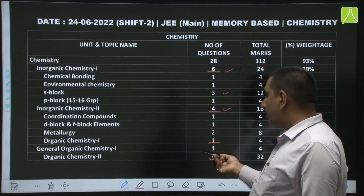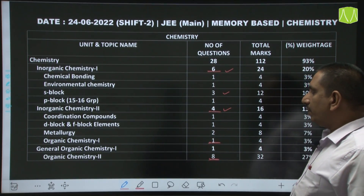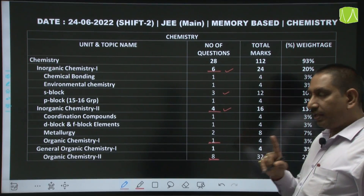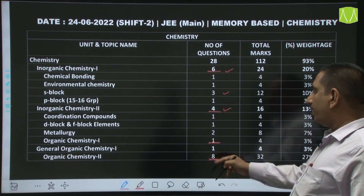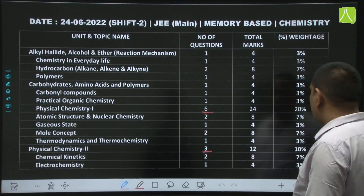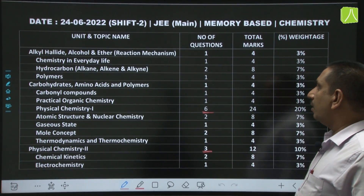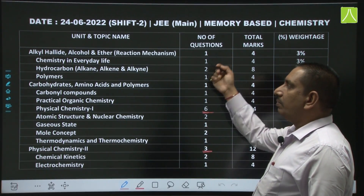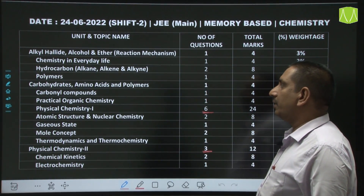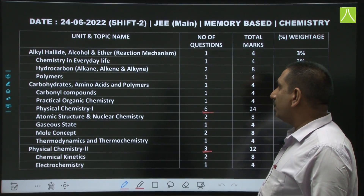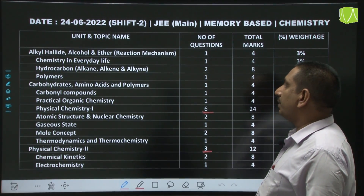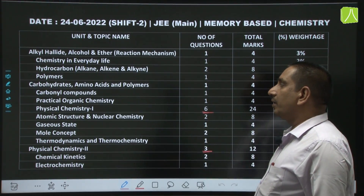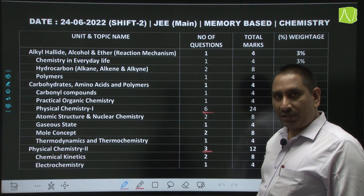Next, if you come to organic chemistry: from 11th organic chemistry, 1 question came — that is from GOC — and from organic chemistry part 2, that is 12th organic, 8 questions came. In this, 1 question from alkyl halides, alcohol and ether, 1 question from reaction mechanism, 1 question from chemistry in everyday life, and 2 questions from hydrocarbons — alkane, alkene, alkyne.